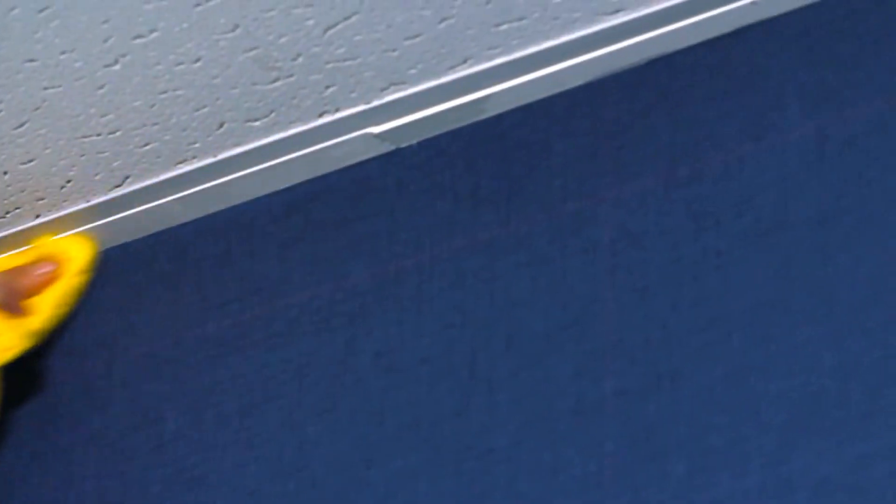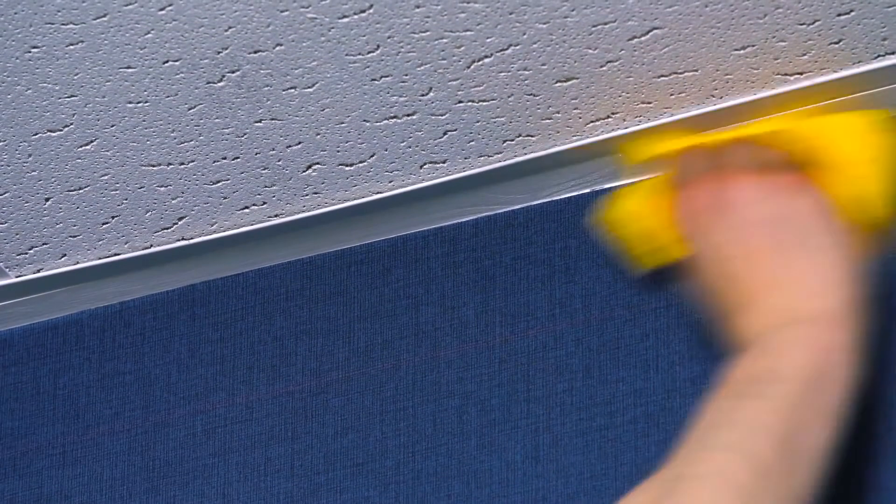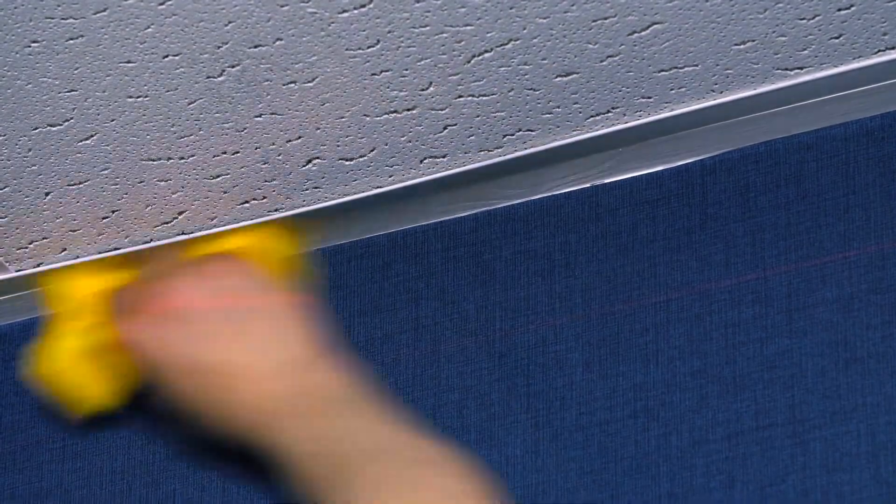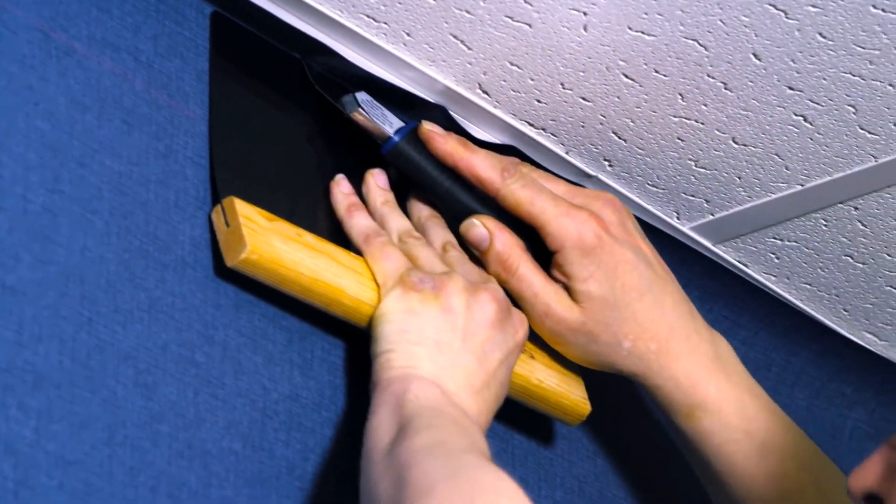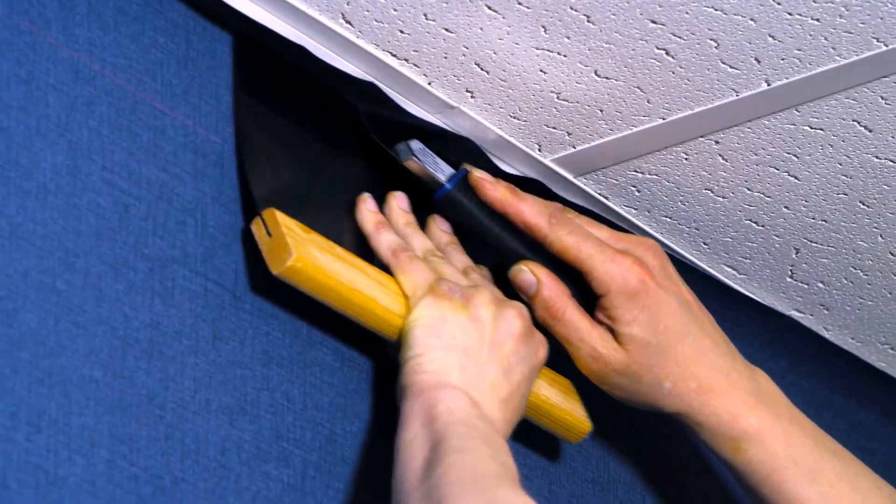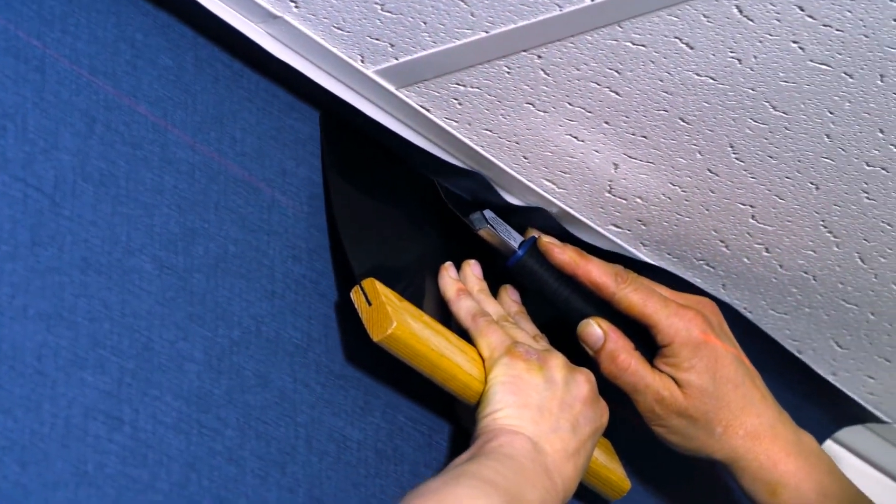Be careful not to get adhesive on the face of the wall covering. Any excess adhesive should be removed immediately using clean water. Leave the material to settle before trimming the top and bottom. After three drops have been installed, step back and examine the results.